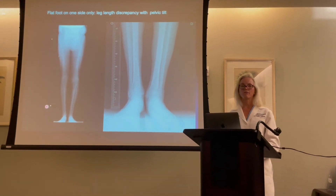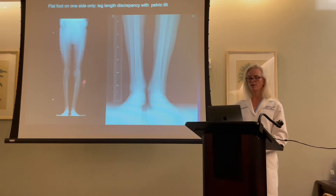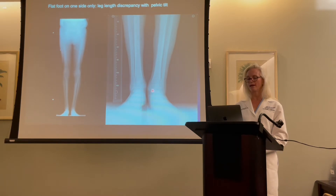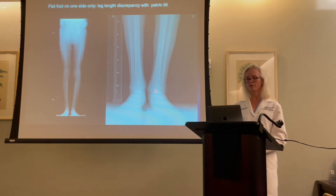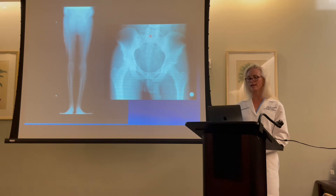A flat foot on one side only can actually cause a leg length discrepancy. So this is a full half-body x-ray, and as you can see here, this is the height of the normal ankle, and this is the height of the ankle with the arch collapse. So there's at least a one and a half centimeter difference, and if you look at the pelvis, you can clearly see the pelvic tilt and the curvature of the spine.